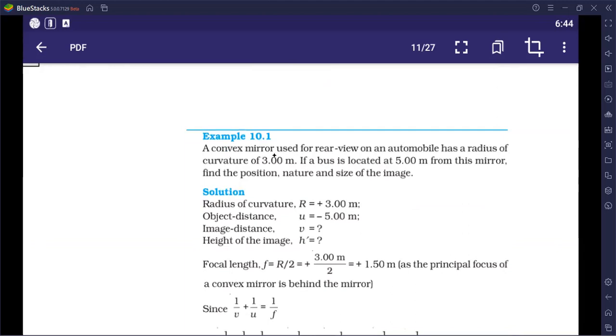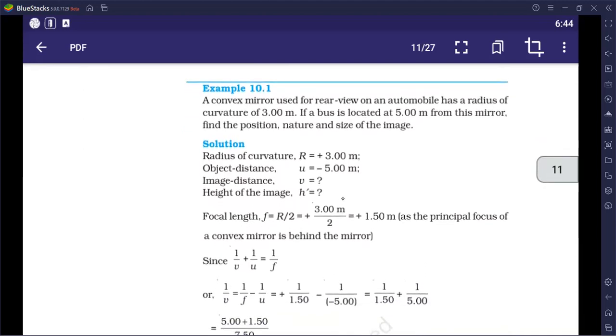Finally, we will solve the numerical. A convex mirror is used for rear view on automobile. It has a radius of curvature of 3 meters. If a bus is located at 5 meters from the mirror, find the position, nature and size of the image. So, first of all, this is a convex mirror. What information has been given? The radius of curvature is 3. So, if it is R=3, then we can find F with this. We will apply this formula: F is equal to R by 2.